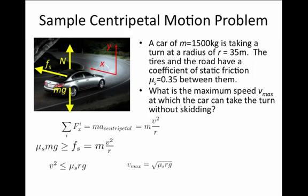So the maximum speed is the square root of μs times r times g. For the particular problem we have here, with μs equals 0.35 and r is 35 meters and g is 9.8 meters per second squared, the maximum speed turns out to be about 13.1 meters per second. This is almost about 30 miles per hour.